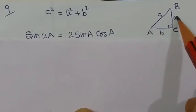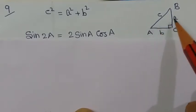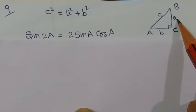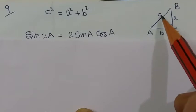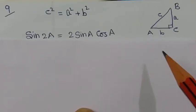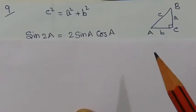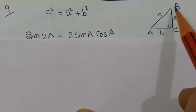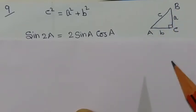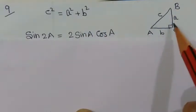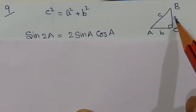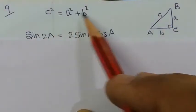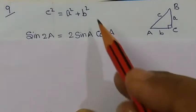Angle A is the opposite side represented by small letter 'a'. Angle B is the opposite side represented by small letter 'b'. Angle C is the side represented by small letter 'c' — the capital letter is the angle, small letter is the side. Now applying Pythagoras theorem: hypotenuse squared equals base squared plus perpendicular squared, meaning c² = a² + b². This is the Pythagoras theorem.